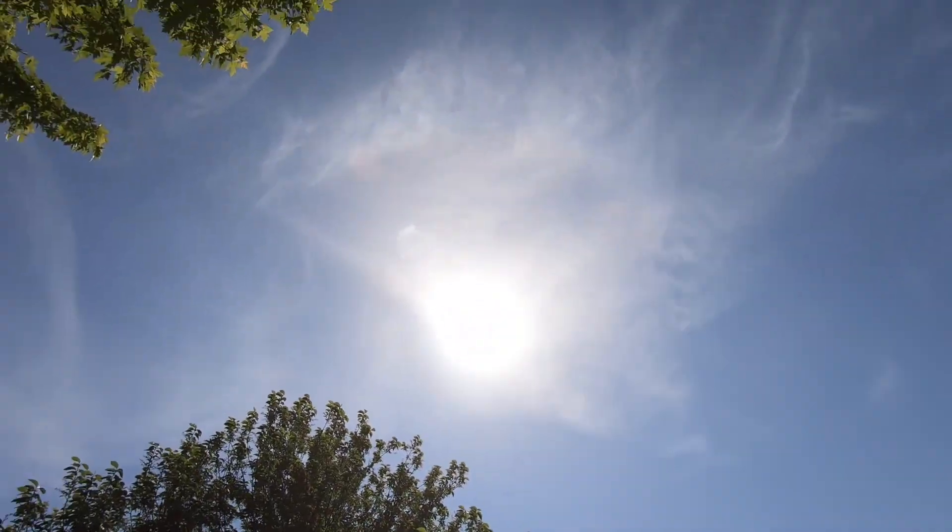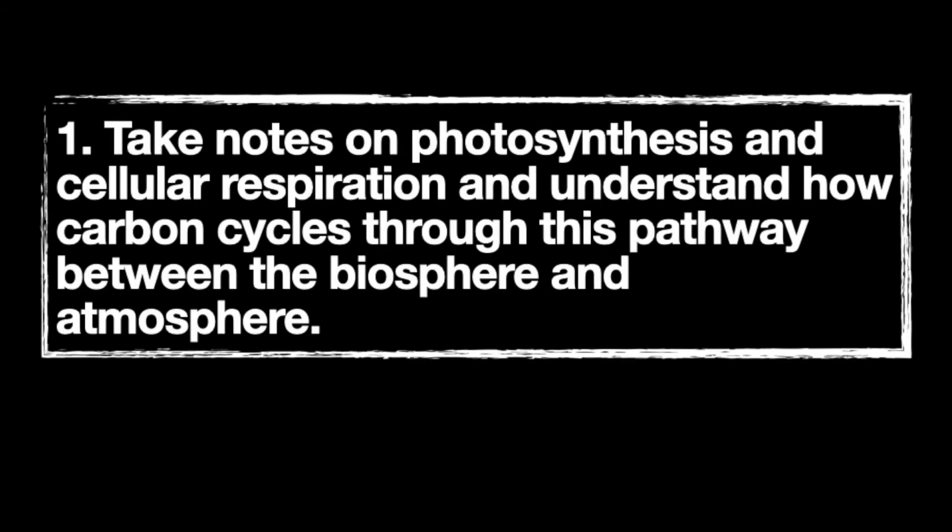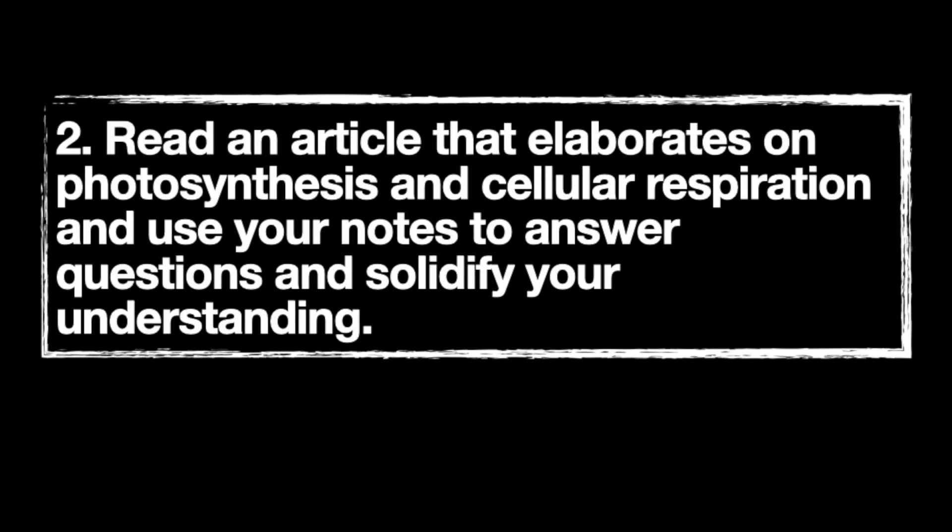One way carbon cycles in the biosphere and atmosphere is through the process of photosynthesis and cellular respiration. Our learning targets for today are: one, take notes on photosynthesis and cellular respiration and understand how carbon cycles through this pathway between the biosphere and atmosphere; and two, read an article that elaborates on the process of photosynthesis and cellular respiration and use your notes to answer questions and solidify your understanding.